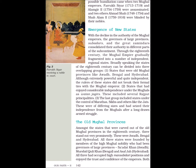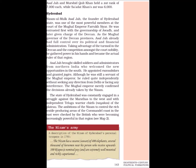The old Mughal provinces. Amongst the states carved out of the old Mughal provinces in the 18th century, three stand out very prominently: Awad, Bengal and Hyderabad. All three states were founded by members of the high Mughal nobility who had been governors of large provinces — Saadat Khan (Awad), Mursheed Kuli Khan (Bengal) and Asaf Jha (Hyderabad). All three had occupied high mansabdari positions and enjoyed the trust and confidence of the emperors. Both Asaf Jha and Mursheed Kuli Khan held a Zat rank of 7,000 each, while Saadat Khan's Zat was 6,000.